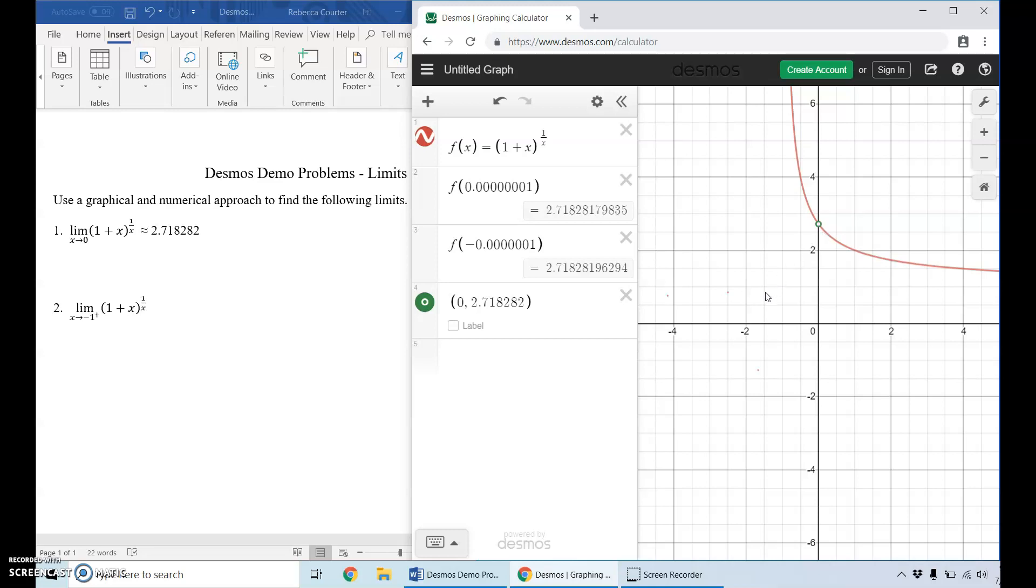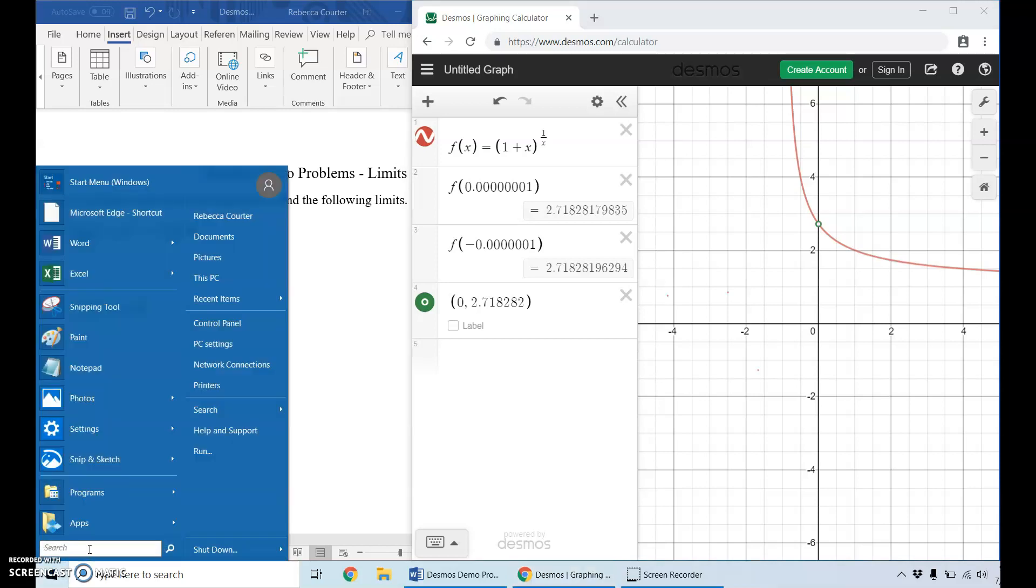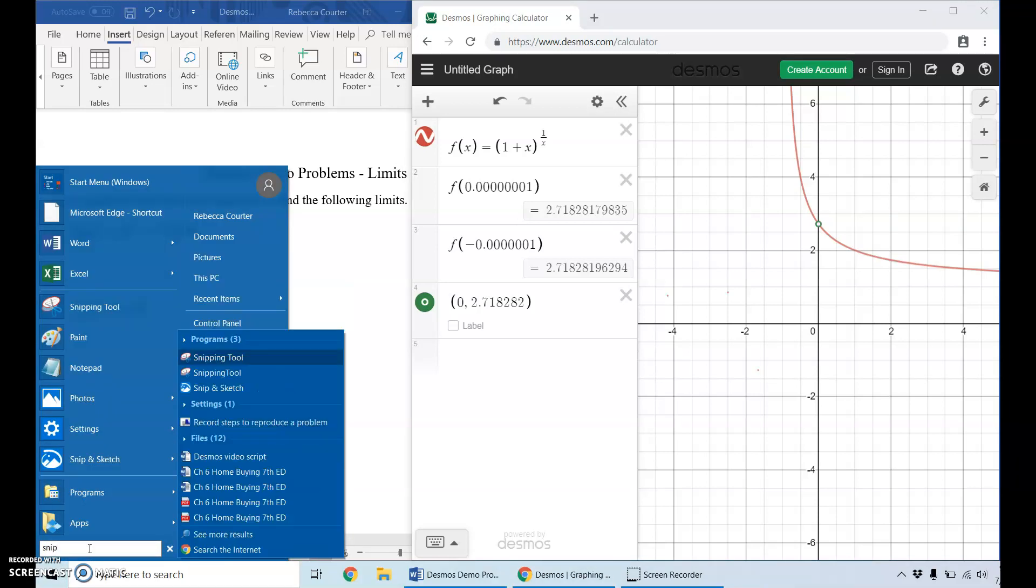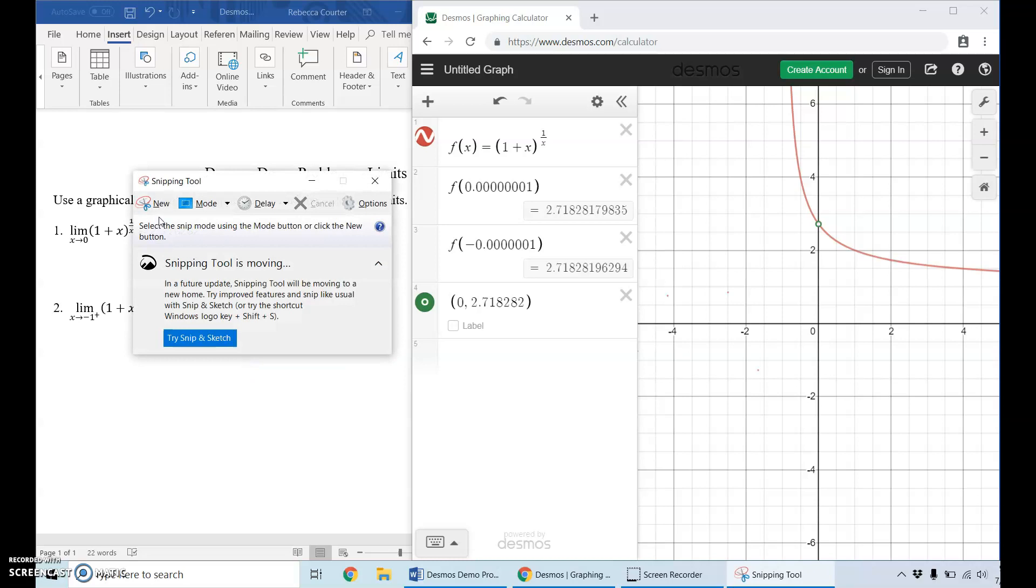Now, to copy this graph and put it into my Word document, there are so very many different ways you could do that. You could take a picture of your computer screen or a screenshot by hitting the Print Screen button, the PRTSC button at the top of your computer's keyboard, and then paste that image into the Word document. Or, if you have a Windows operating system like this, you might have a snipping tool. I'll just search snip.